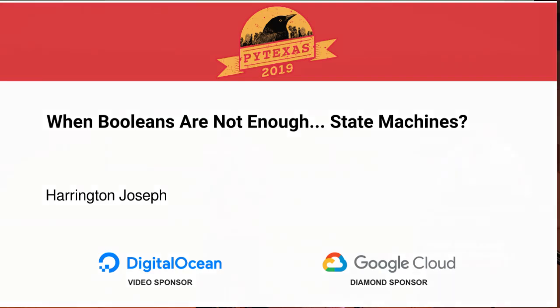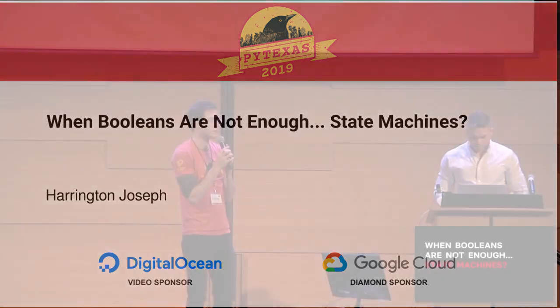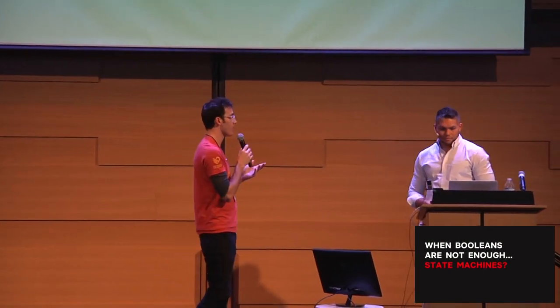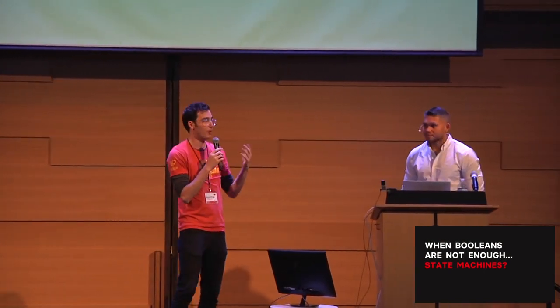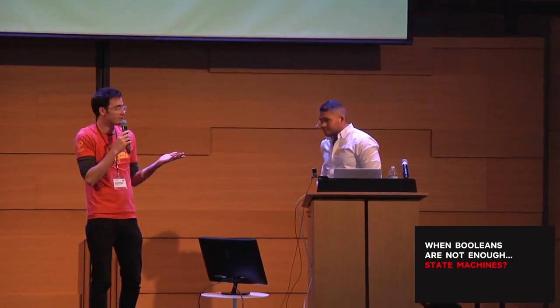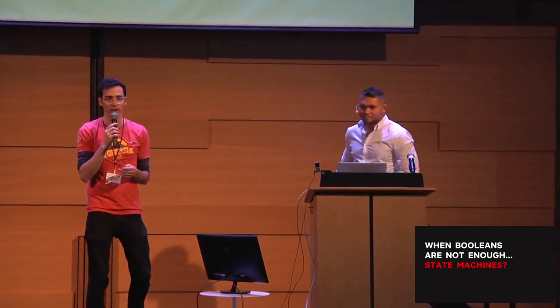Our next talk is going to be Arrington Joseph. He's going to tell us about when booleans are not enough — state machines. Let's give him a round of applause.